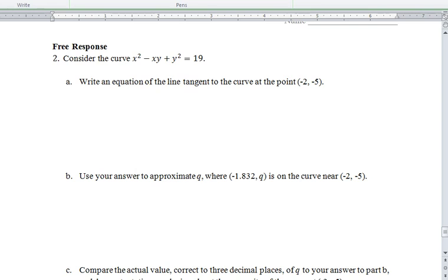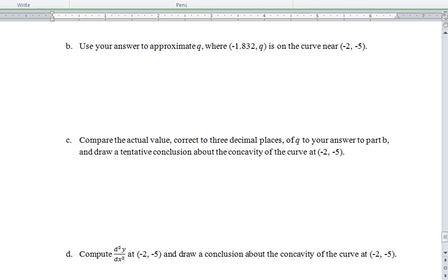Now C was the problem. C says compare the actual value, correct to three decimal places, of Q to your answer to part B, and draw a tentative conclusion about the concavity of the curve at negative 2, negative 5. So notice this number, this negative 1.832, is really close to negative two. They're wanting you to use the tangent line approximation, or they're wanting you to compare the true answer to the tangent line approximation. So to get the real answer, x is negative 1.832. So you're going to plug that into the original curve. We have x squared minus x times y plus y squared is equal to 19.